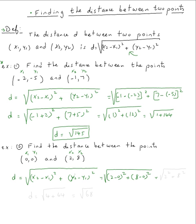So we get: two minus zero is two, two squared; eight minus zero is eight, eight squared; all under the square root. The distance equals the square root of four plus sixty-four, which is the square root of sixty-eight. And that's it.